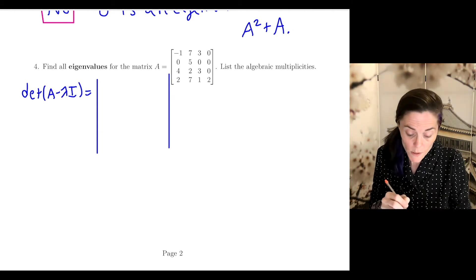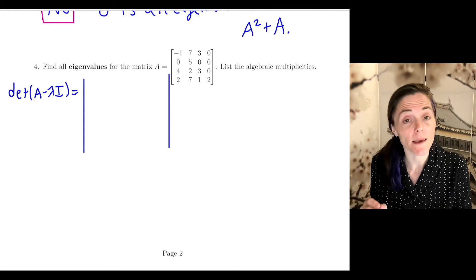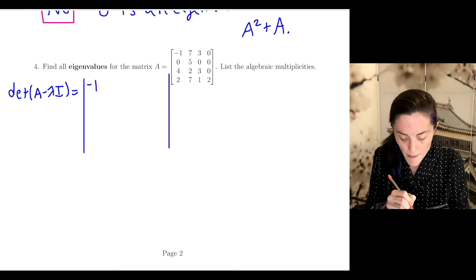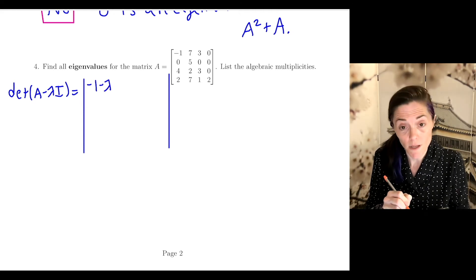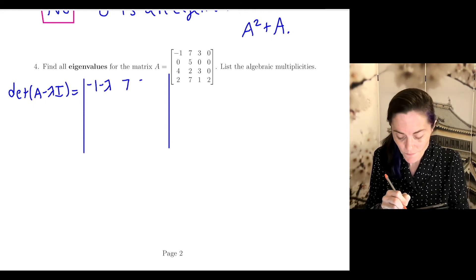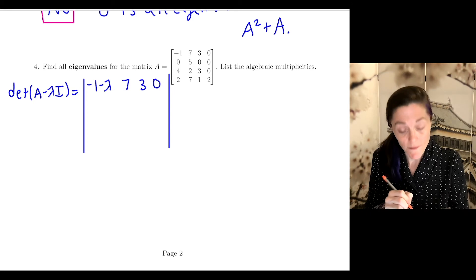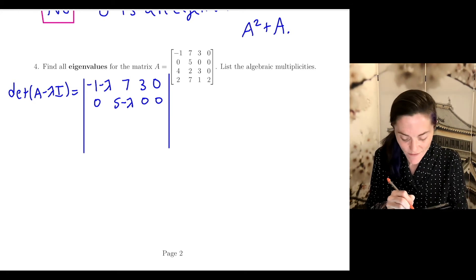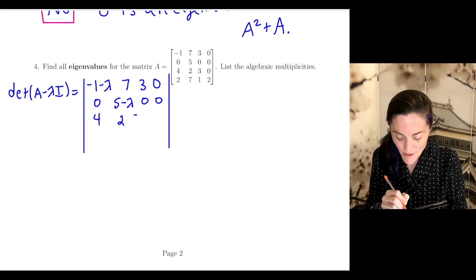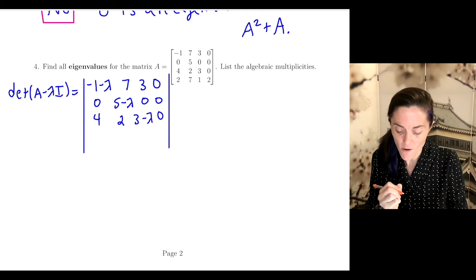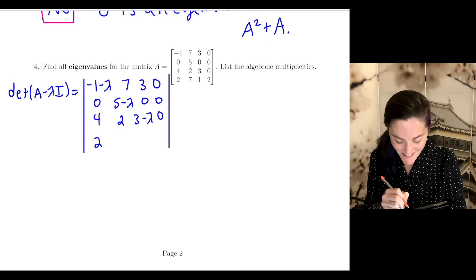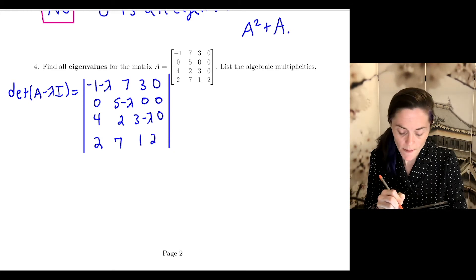When we form the matrix A minus lambda I, we subtract lambda from the diagonal and the rest remains the same. So here I have (-1 - λ, 7, 3, 0), next row (0, 5 - λ, 0, 0), next row (4, 2, 3 - λ, 0), and the final row (2, 7, 1, 2 - λ).